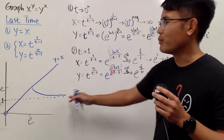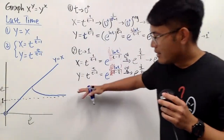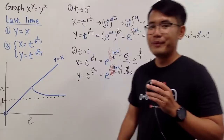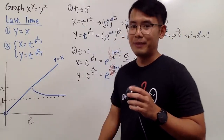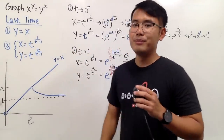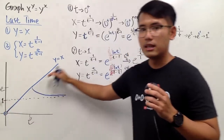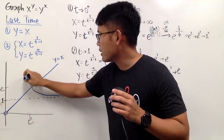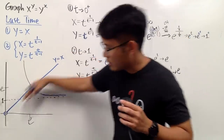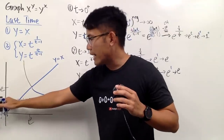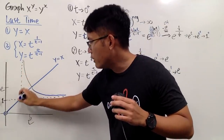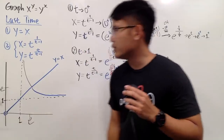Ideally you should plot more points, but the curve goes like this. And because the graph is symmetrical about y=x, you can just flip that curve to get the other branch. So you get a nice symmetric curve — the first branch had a horizontal asymptote at y=1, and the reflected branch has a vertical asymptote at x=1. So it's pretty much this graph and that together.